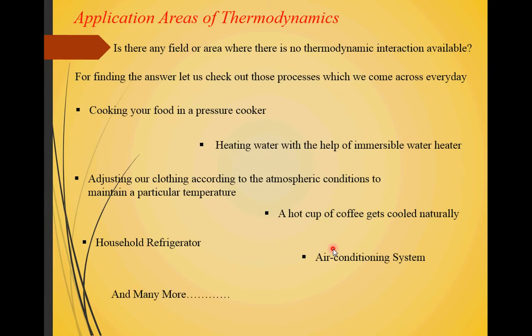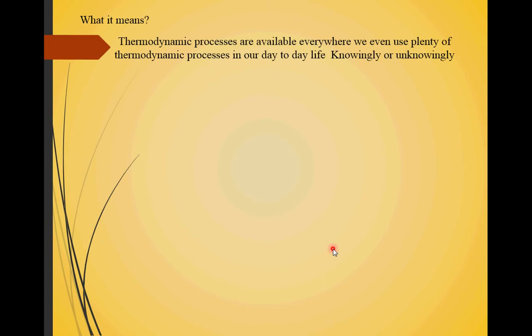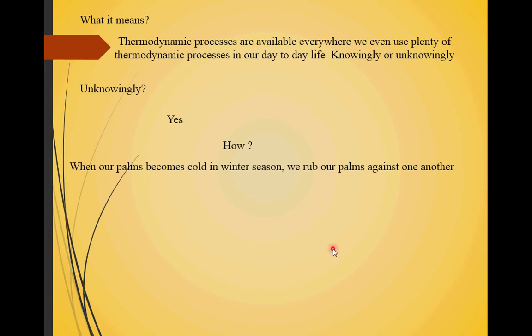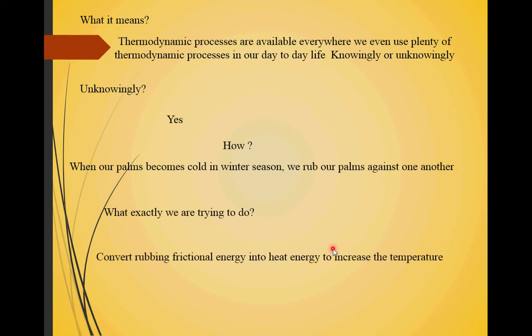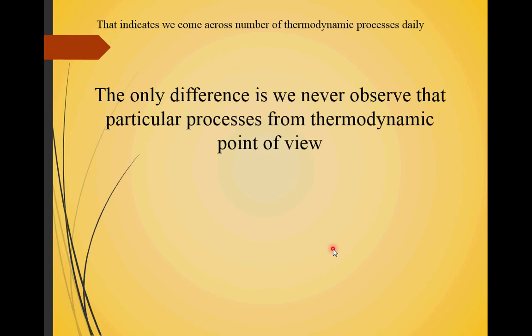There are many examples we come across daily but never observe from a thermodynamic point of view — thermodynamic processes are available everywhere. We use plenty of thermodynamic processes in our day-to-day life, knowingly or unknowingly. For instance, when our palms become cold in winter we rub them against one another. What we are doing is converting frictional rubbing energy into heat energy to increase the temperature of our palms. This indicates we come across many thermodynamic processes daily — the only difference is we never observe them from a thermodynamic point of view.